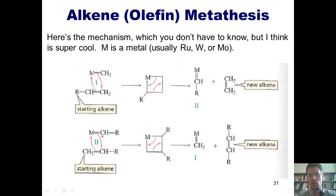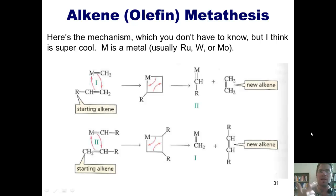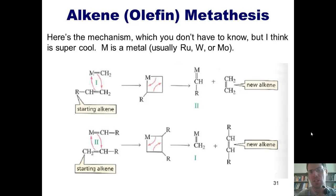This molecule now undergoes an analogous transformation with a second molecule of the original alkene to form a four-membered ring. A subsequent electron rearrangement then releases the alkene product in which the internal carbon from one alkene has formed a double bond with the internal carbon from the second alkene, and releases the metal double bonded to a CH2, which goes back and repeats the cycle. You don't have to know this mechanism, but I think it's supremely cool — and the work of Grubbs, Schrock, and Chauvin, both in developing the chemistry and discovering this mechanism, is why they shared the Nobel Prize.